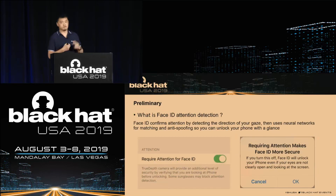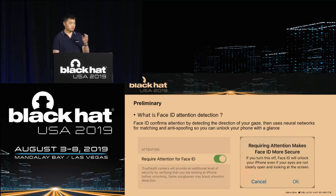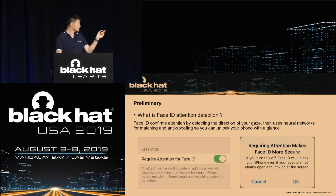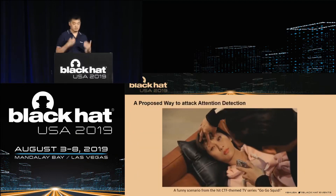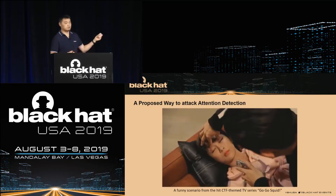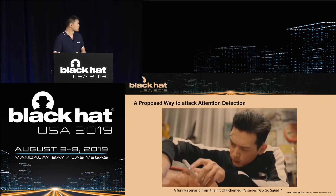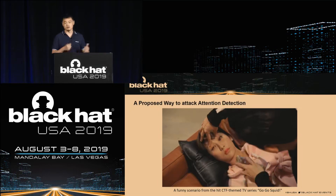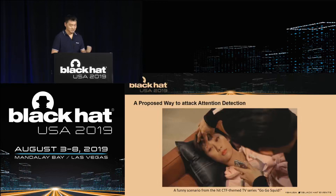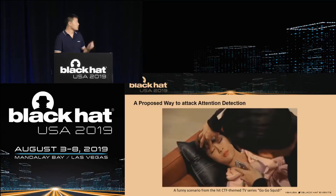The third concept is Face ID attention detection. Attention detection checks whether you are looking at the camera when trying to unlock your phone. By default this detection is enabled, and if you want to disable it, an alert is shown. My talk will not cover obvious bypass methods — I will introduce an ultra-low-cost way to do it.